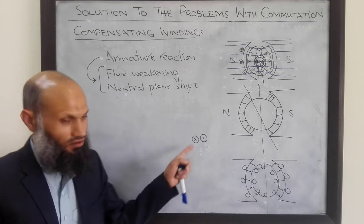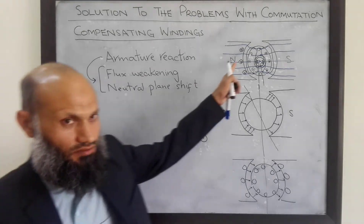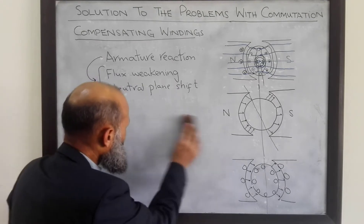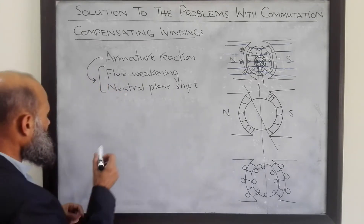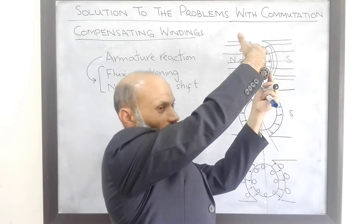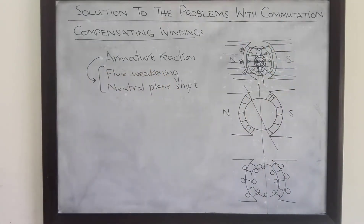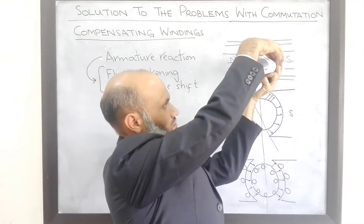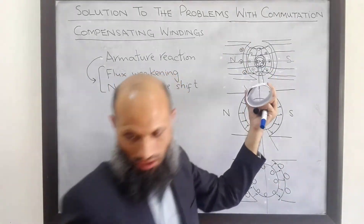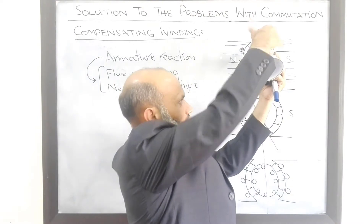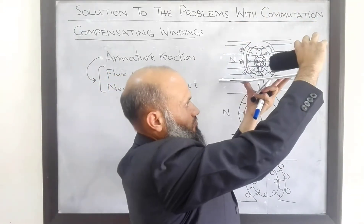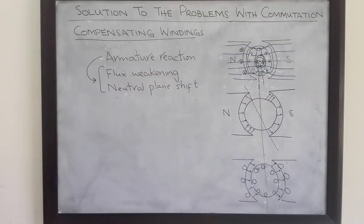There is another diagram which is sometimes more convenient and illustrative to demonstrate all these effects. What we do is take this DC machine — with one pole here and another pole here — and if we cut it and open it, we see it from the front: one pole, another pole, and the windings. Let's draw it in this figure. We see one pole — the south pole — and the north pole.